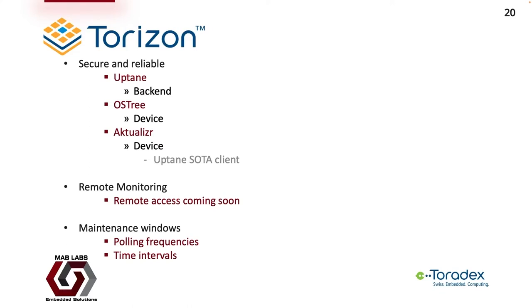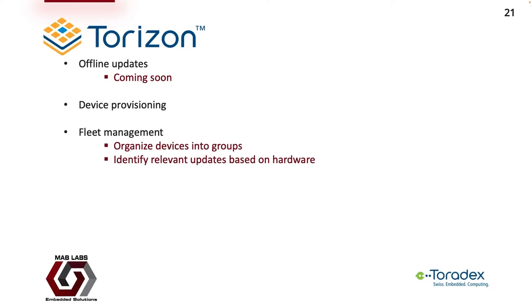Torizon addresses the requirements we just mentioned and incorporates the frameworks listed. Security and reliability are achieved using Uptain and OSTree. Specifically, Aktualizr is the framework used on the device that serves as a SOTA client for Uptain, and it uses OSTree to manage file system revisions. Torizon also supports remote monitoring, which we will see in the demo. Remote access is a feature coming soon. Maintenance windows are also supported, where polling frequencies and update time intervals can be defined on the device. Torizon will support offline updates in a future release, and it also supports device provisioning and fleet management so that devices can be organized into different groups.